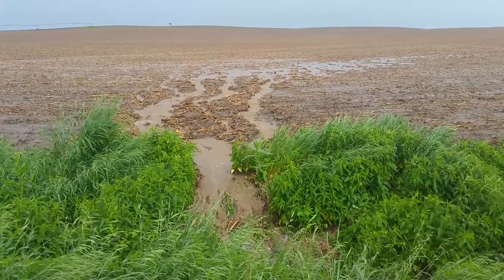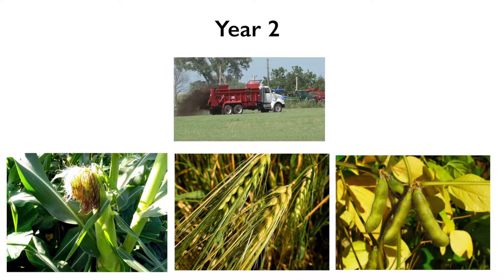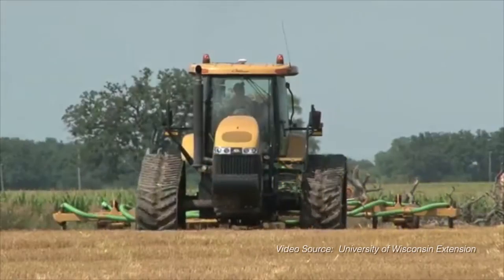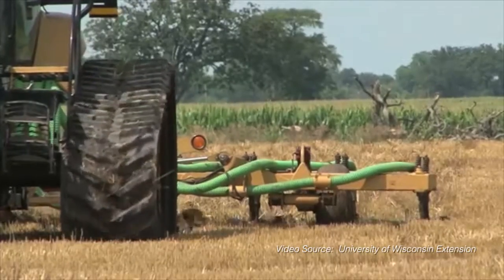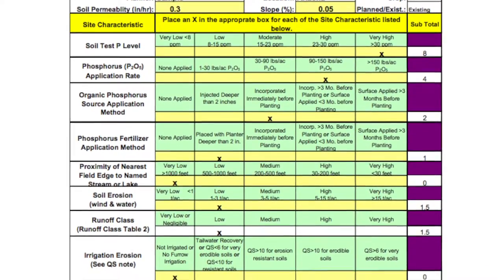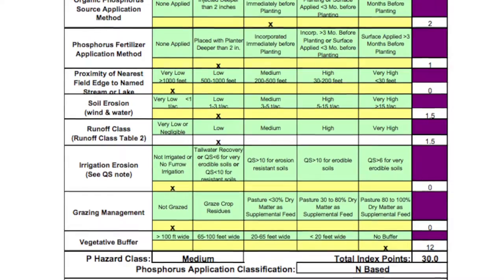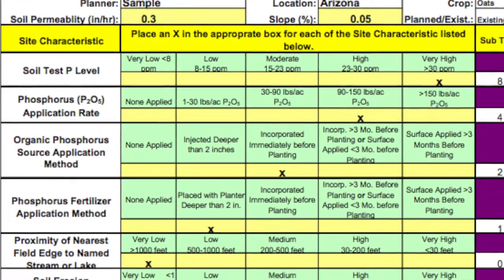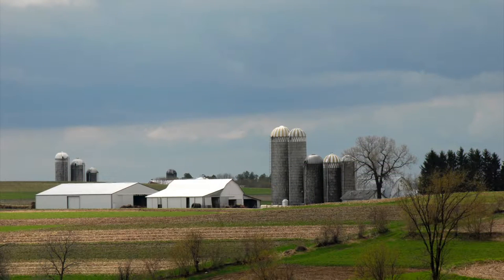Preventing additional phosphorus buildup can be managed with several strategies. One is to rotate manure application, meaning waiting perhaps three years between manure applications in order to allow crops more time to use up the phosphorus that was applied. Another option is to lower the manure application rate to a level that applies only as much phosphorus as the crop will use that year. In most states, a field-specific risk assessment tool called a Phosphorus Index, or P-Index, can be used to determine if manure can be applied at a full nitrogen-based rate or lowered to a phosphorus-based rate. In some cases, the P-Index may show that phosphorus application — manure or otherwise — should be decreased or discontinued.